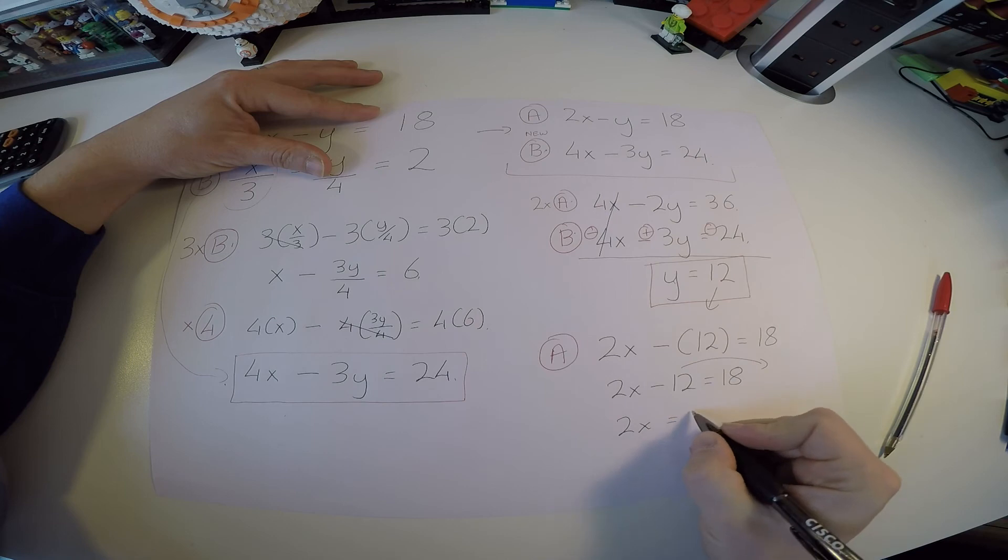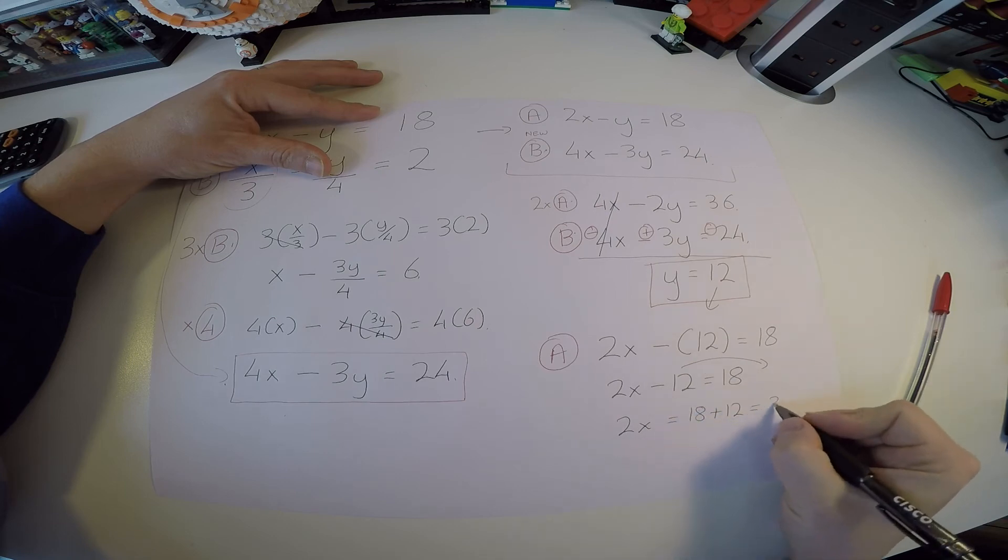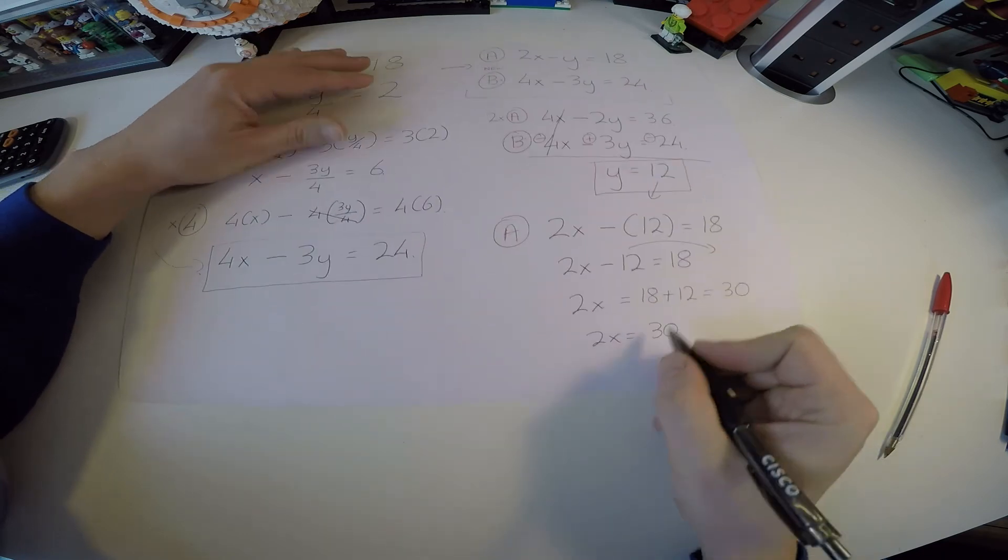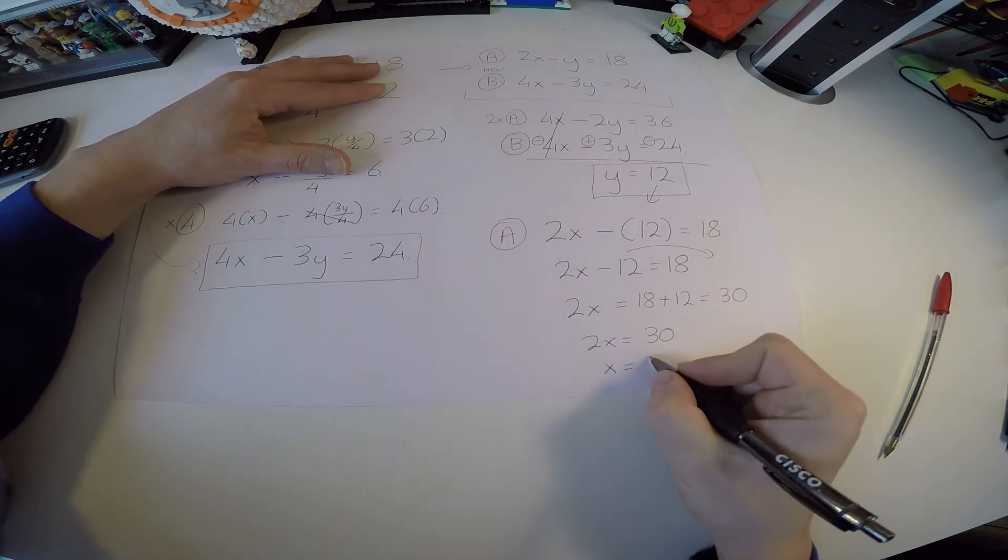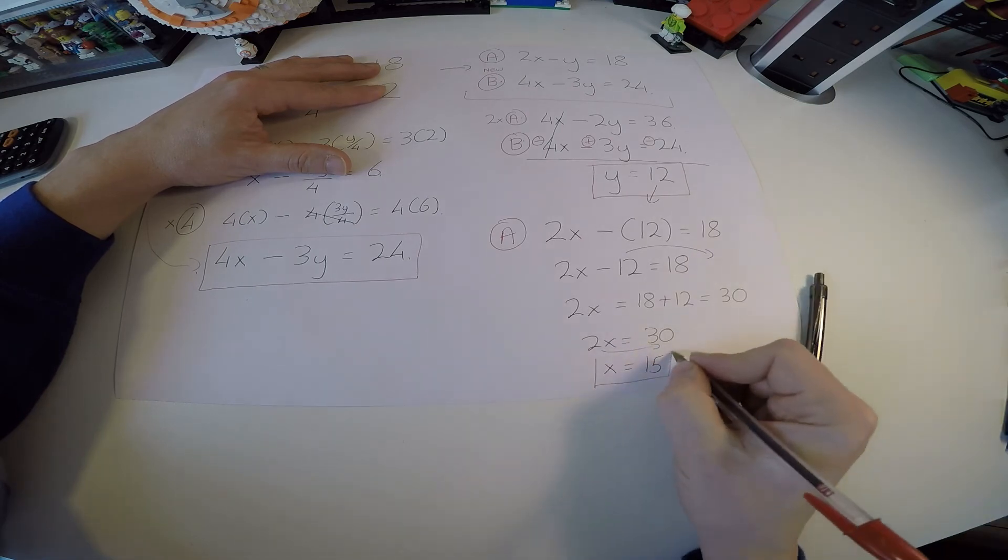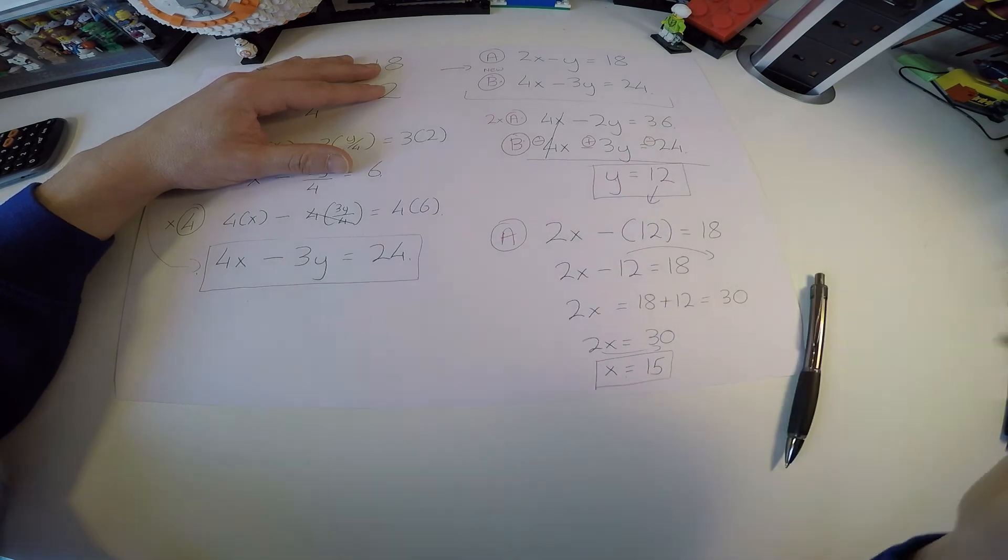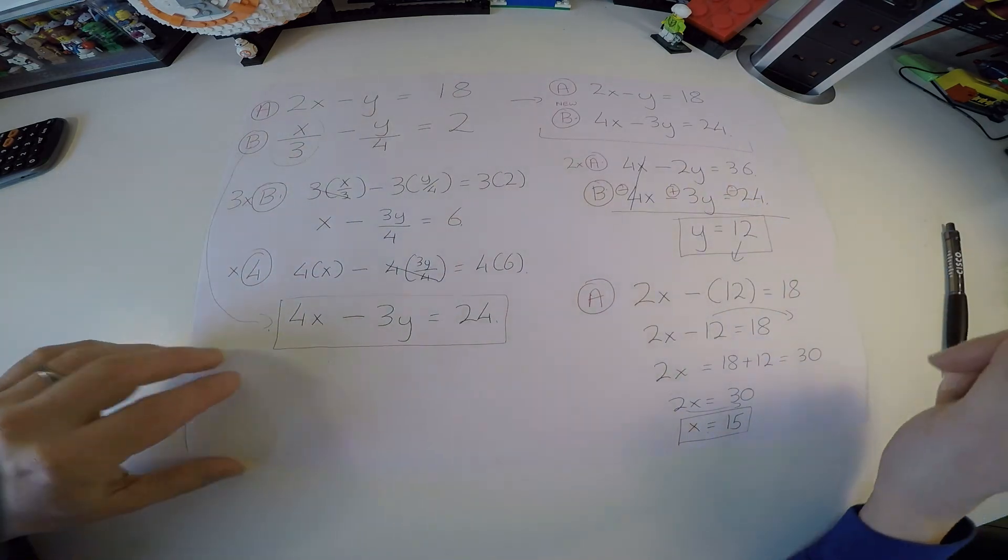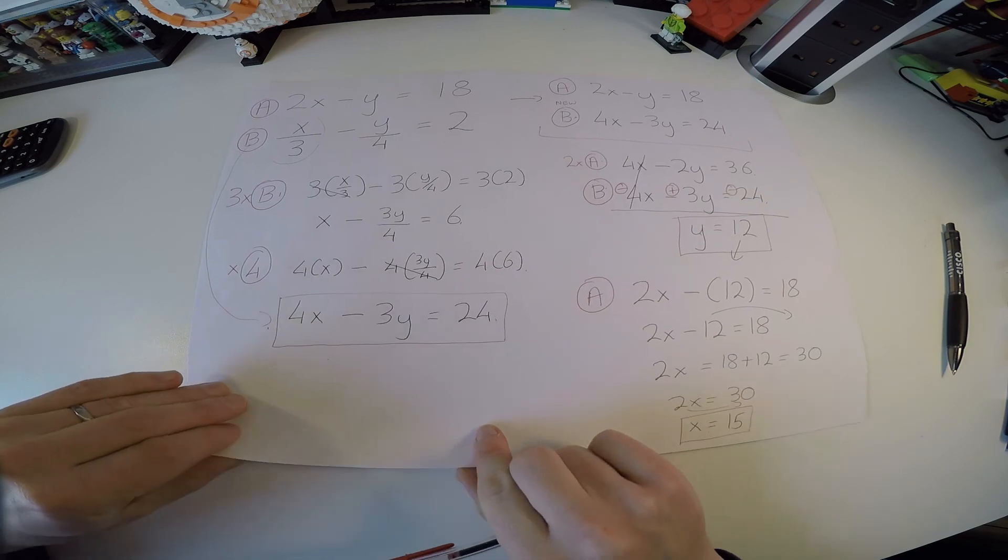2x, now he comes over, is equal to 18 plus 12, which is equal to 30. So actually 2x is equal to 30, meaning x must be equal to 15 when he comes down underneath. So we have it. x is equal to 15 and y is equal to 12. This is a long way of doing it to get rid of these fractions, but it's a safe way of doing it, and that's the way I look at it.